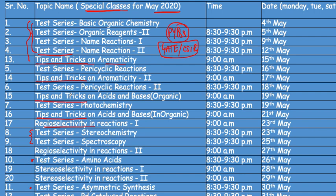There are two sessions on aromaticity — discussion sessions where I discuss theory as well as simultaneously do practice. The test series sessions are in the evening from 8:30 to 9:30 PM and the discussion sessions are in the morning at 9 AM. The complete schedule for the month of May has 12 test series and 8 discussion sessions, making a total of 20 free live classes.